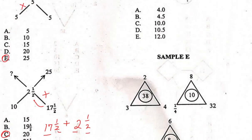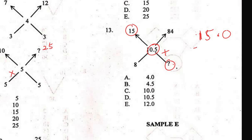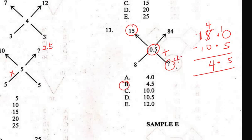For Question 13, the missing value plus another value should give 15. So 15.0 minus 10.5: borrowing — 10 minus 0, bring over, 9 minus 5 = 4, bring down the 4. The answer is 4.5, option B. Checking: 4.5 + 10.5 = 15, which is correct.